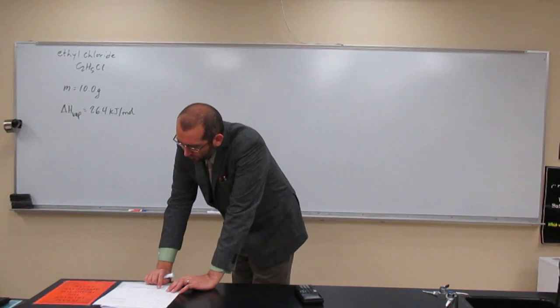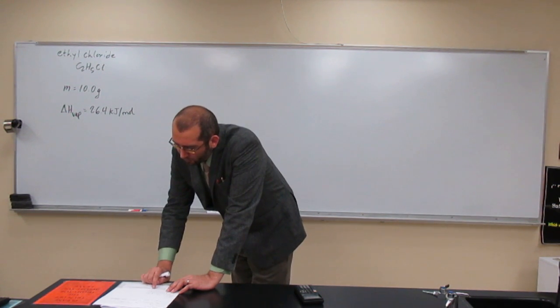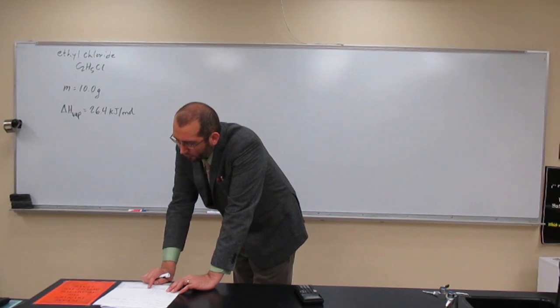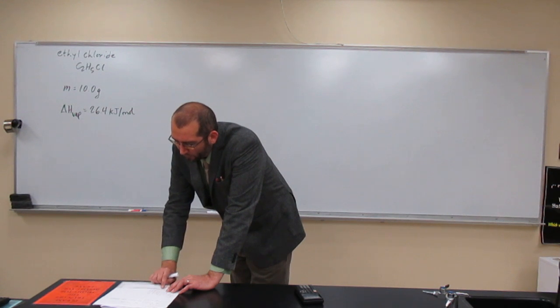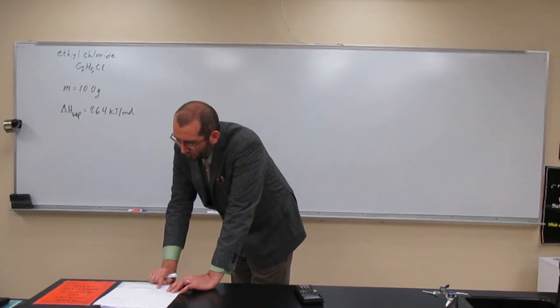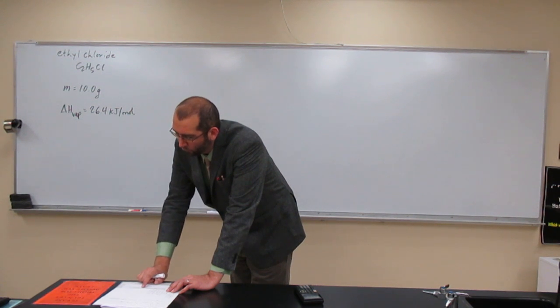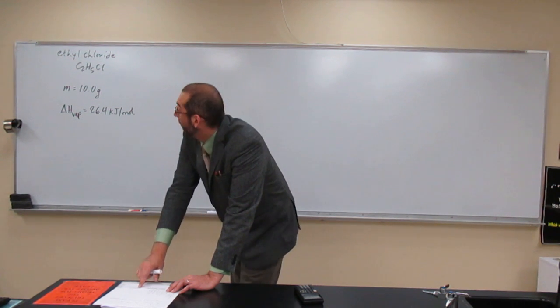So this one says ethyl chloride, C2H5Cl, is used as a local anesthetic. It works by cooling tissues as it evaporates. The heat of vaporization is 26.4 kilojoules per mole. How much heat could be removed by 10 grams of ethyl chloride?